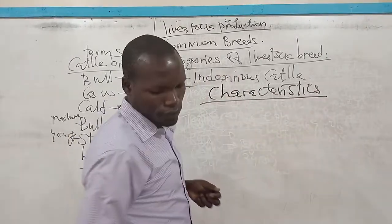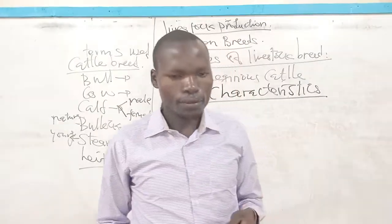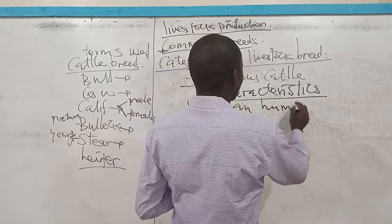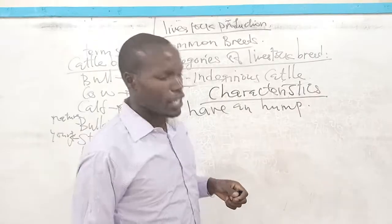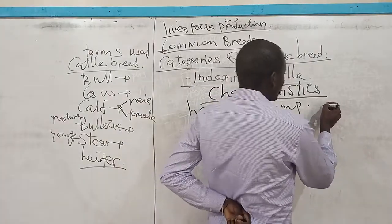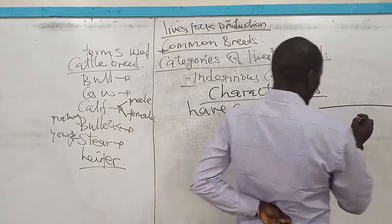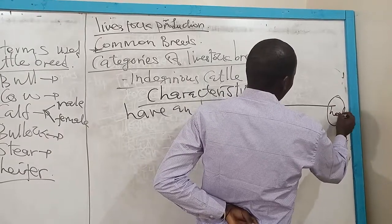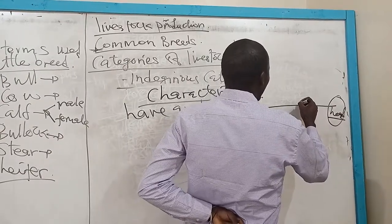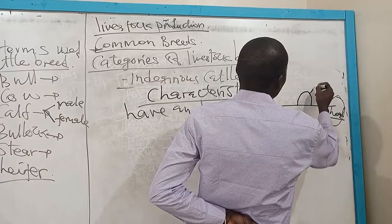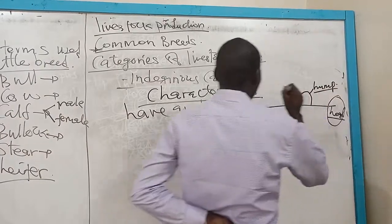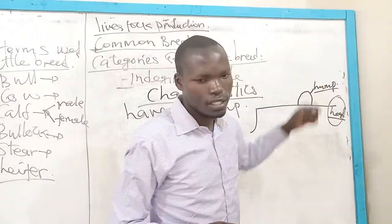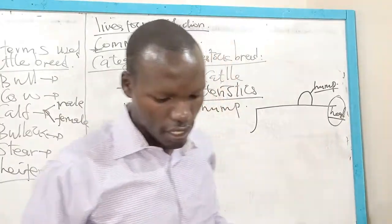The characteristics of the indigenous cattle. One: they have a hump. For instance, when you see cattle, look at the top part mainly from the back — if this is the back top line, you are going to see a hump at the back. This is what we are calling the hump. Once you see cattle with a hump, you can very quickly classify it into the category of the indigenous cattle.